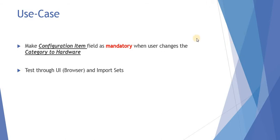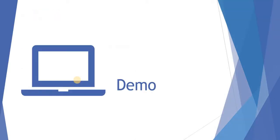In our use case, we will be making the configuration item field mandatory when the user changes the category to hardware. So whenever somebody is inserting or updating a record with category set to hardware, the configuration item will become mandatory. We will test this both through the UI browser and through import sets.